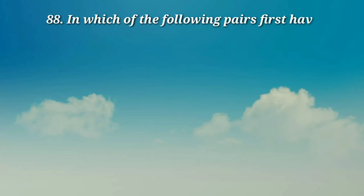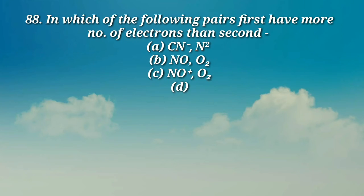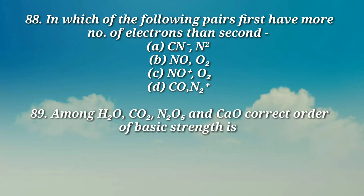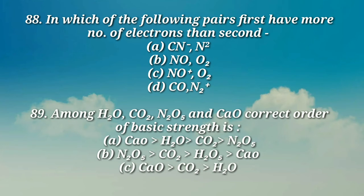Question number 88: In which of the following pairs first have more number of electrons than second? (a) CN-, N2-, (b) NO, O, (c) NO, O-, (d) CO, N. Question number 89: Among H2O, CO2, N2O5, and CaO, correct order of basic strength is: